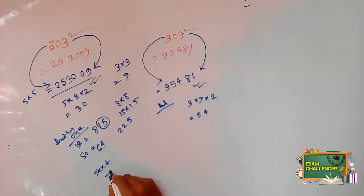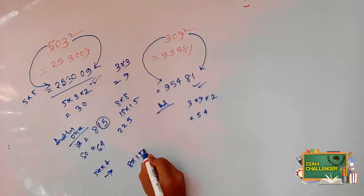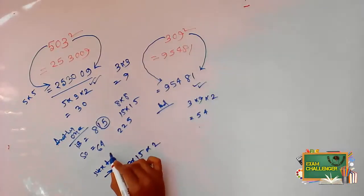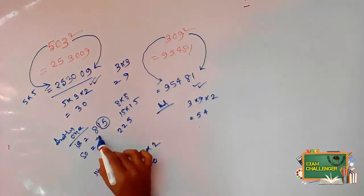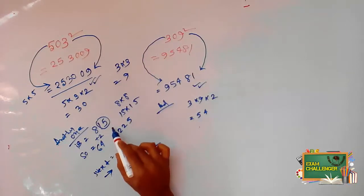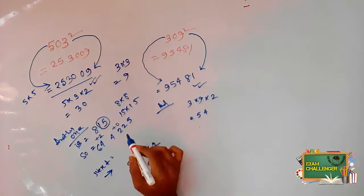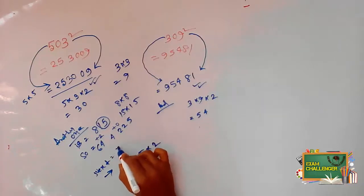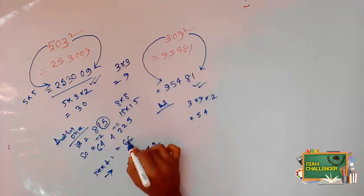Next, 8 into 14 into 2. The total here becomes 224. So the answer will be 642,225.